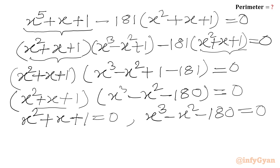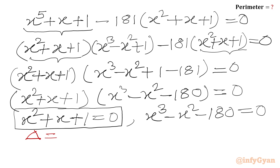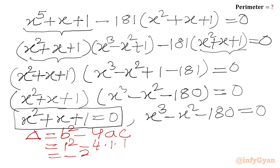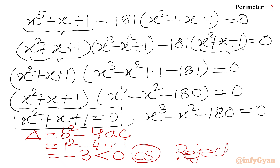From the product-zero rule, either x squared plus x plus 1 equals 0 or x cubed minus x squared minus 180 equals 0. If we check the discriminant of the first quadratic: delta equals b squared minus 4ac equals 1 squared minus 4 times 1 times 1 equals 1 minus 4 equals minus 3. The discriminant is negative, so we get complex solutions and we reject this case.